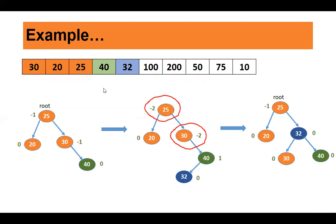Now our tree has 25 as root, with 20 and 30 as children. Next, insert 40. Compare it with 25 — greater than 25, so go to right. Greater than 30, so insert it as right child of 30. Balance factor of 40 is 0, 30 is -1, and the root 25 has balance factor -1. The tree is still balanced, so there is no need to carry out any rotation.